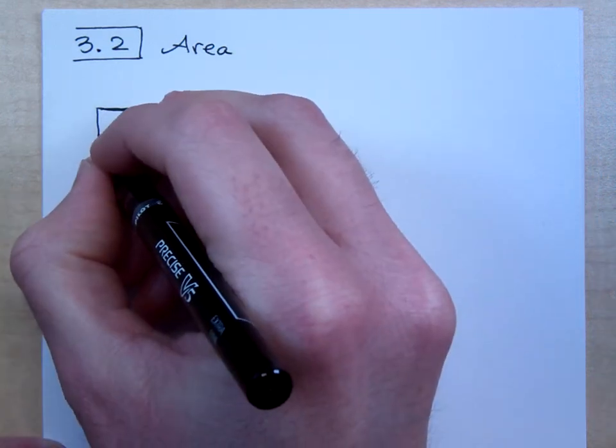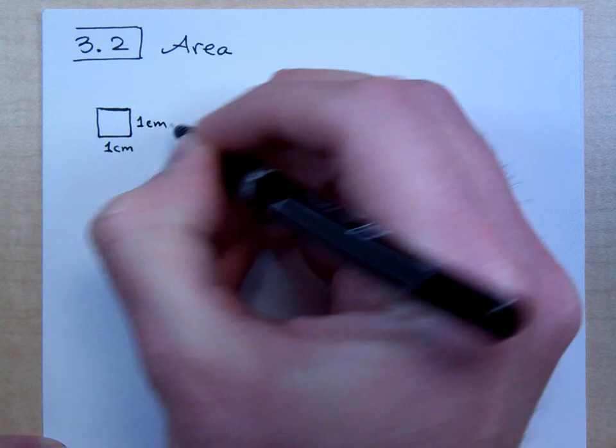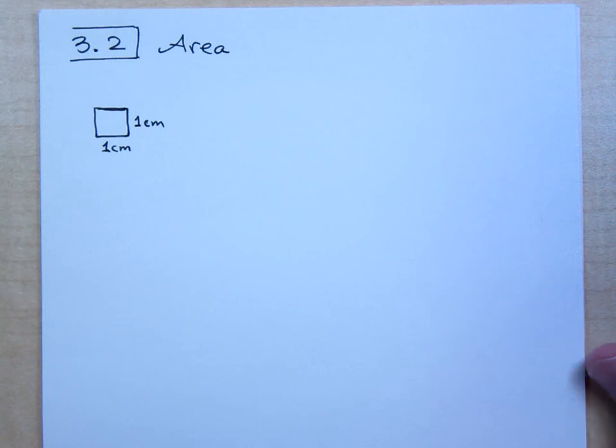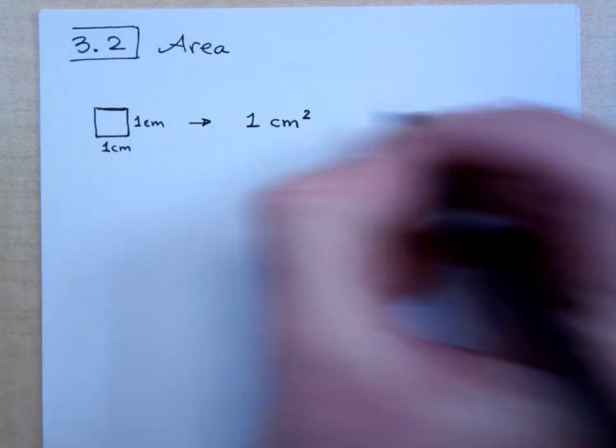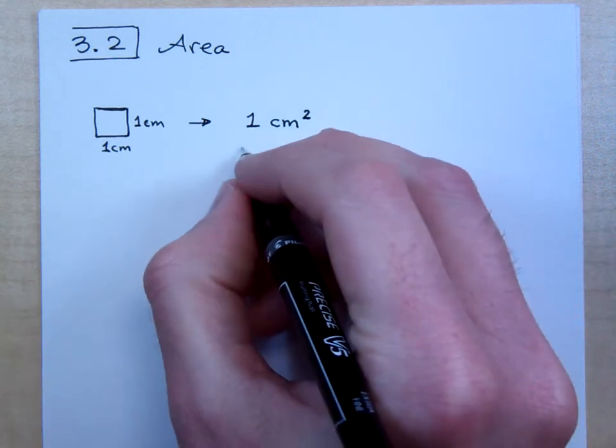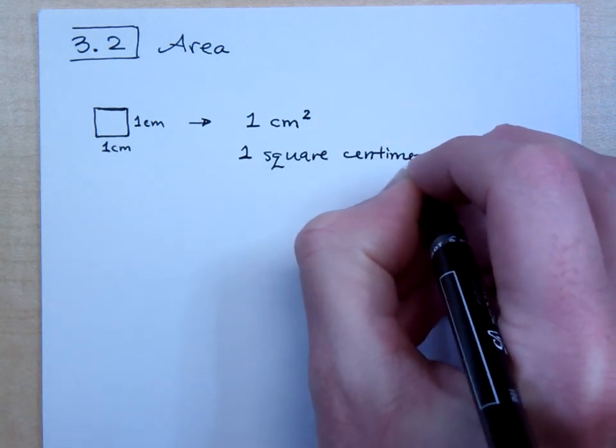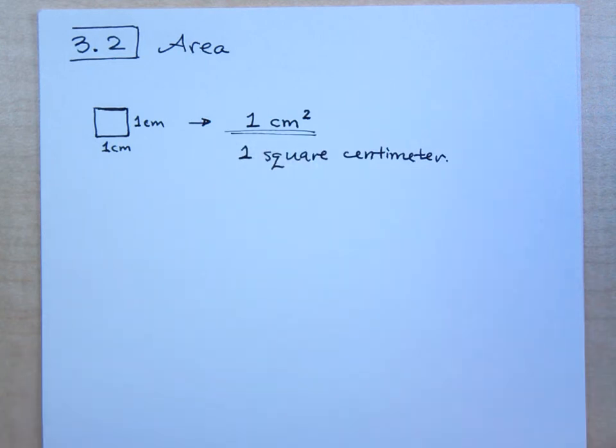Suppose I say this is a one centimeter square, so it's got one centimeter edges all the way around. Whether or not that's true depends on how large the window is that you're viewing this video in. So, what we would say here is that this guy is one square centimeter. So, we would read this as one square centimeter, but we would write it like this. When we see these square units, that means we're talking about area. Area is measured in square units.